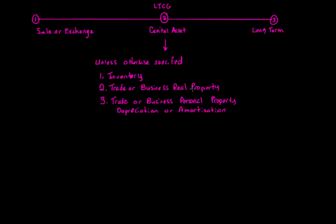Real property is the land and everything attached to the land — buildings, fixtures on the buildings, fences — items attached to the land or to the building that's attached to the land. Personal property is everything else. All real property has to be tangible. Personal property can be tangible or intangible. Personal property can be depreciable or amortizable. In order for personal property to not be a capital asset, it has to be considered depreciable or amortizable.